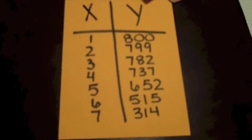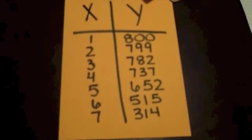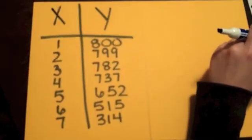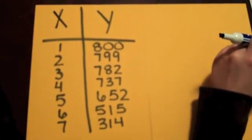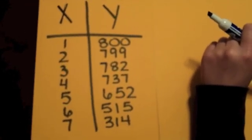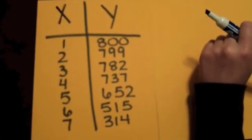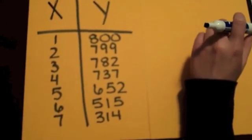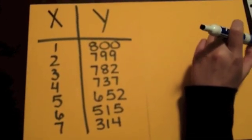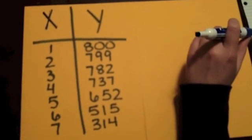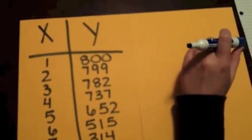She has been given a table of values as you can see here. Her first step to finding the equation to the polynomial function is to find what degree the polynomial function is. In order to do that, she is going to have to find the rate of change of the given variables and their output.